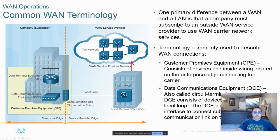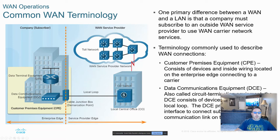For traditional WAN terminology, the line shown here is called the demarcation, or demarc. This side would be the customer site, known as customer premise equipment, or CPE. The service provider connecting device at the customer site is traditionally called a DCE — data communications equipment. The customer-owned device that connects to that is typically called a DTE. The demarc determines what is the company's responsibility to maintain versus what is the service provider's. The local loop is the connection between the customer site and the provider's central office.